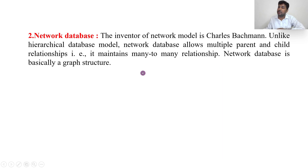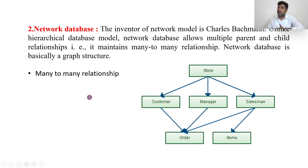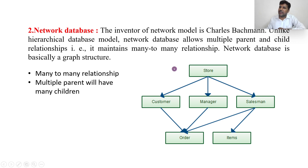Next is the network data model. Unlike the hierarchical data model, the network data model allows multiple parents and child relationships — that means many-to-many. You can see that Order is connected to Sales, Manager, and Customers, so Order contains multiple parents. Sales also contains multiple children. So multiple parents will have multiple children — it is many-to-many, not just one-to-many. Anyone can be connected to anyone.